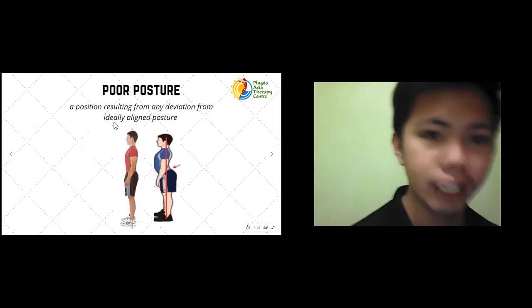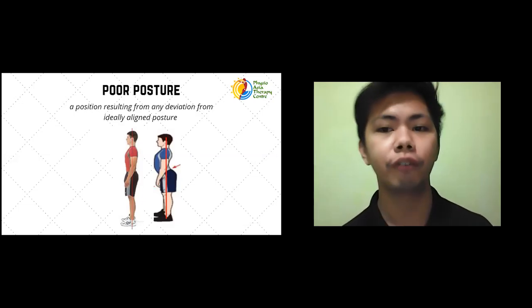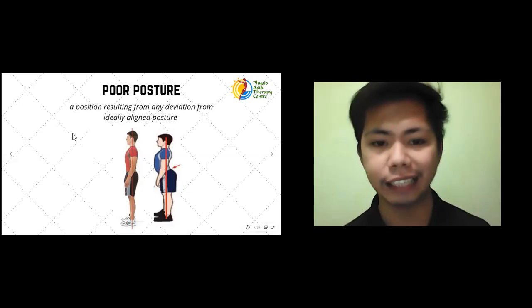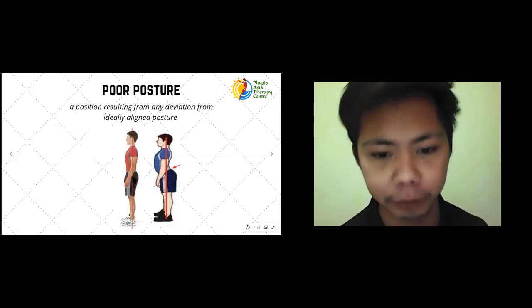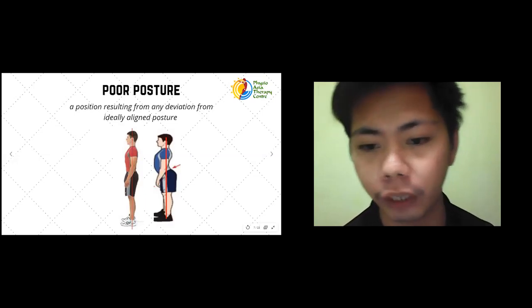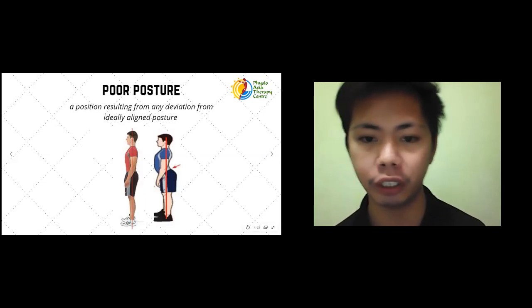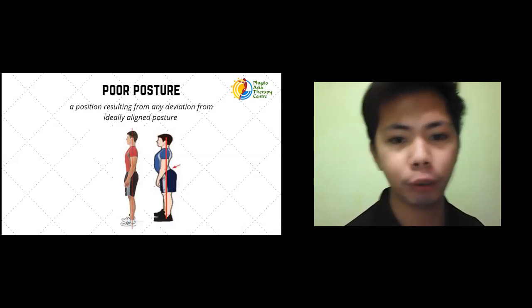Now let's discuss poor posture. Poor posture is a position resulting from any deviation from an ideally aligned posture. For example, we discussed that an imaginary line should pass through your ears, shoulders, hips, and ankles. If the hips are pushed too far backward, the body parts are not aligned, and that is considered a poor posture.